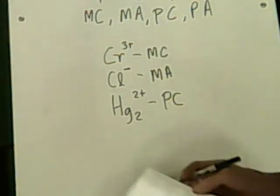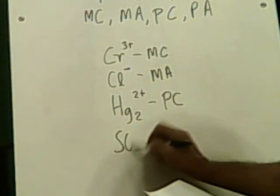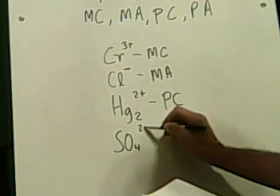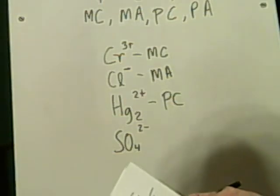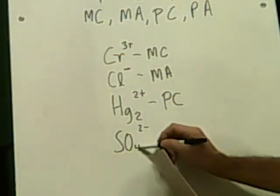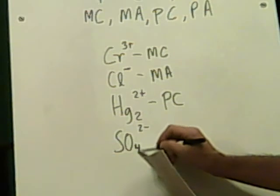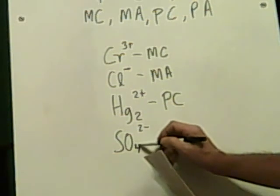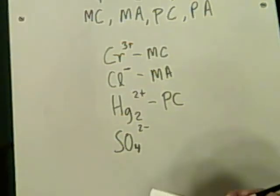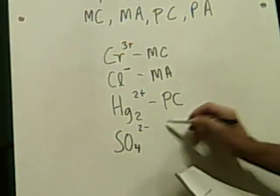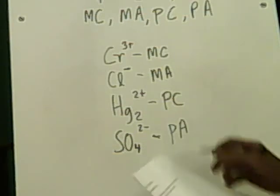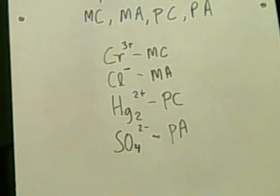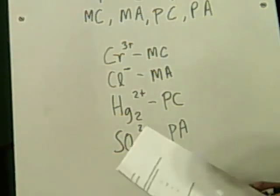Number 4 is SO4 2 minus. This is a sulfate ion — I remember that from high school chemistry. Sulfate is part of sulfuric acid; it's H2SO4, it's got hydrogen and sulfate. This is obviously polyatomic, and it's going to be an anion simply because it's negative. These were not terribly difficult — this is just kind of a warm-up for different chemical ions. Ions are important in ionic compounds.